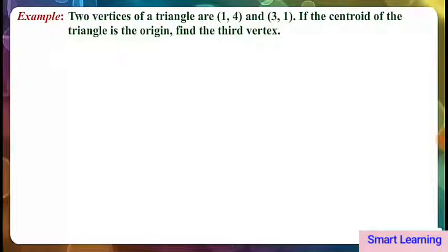Let's take the next example. Two vertices of a triangle are 1 comma 4 and 3 comma 1. If the centroid of the triangle is the origin, find the third vertex.